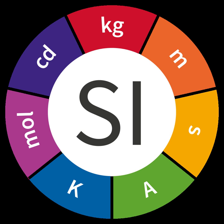After the 9th General Conference on Weights and Measures in 1948, the absolute watt was established, with 1 absolute watt equal to 1.00019 international watts. Texts written before 1948 are likely to use the international watt, which implies caution when comparing numerical values from this period with the post-1948 watt. In 1960 the 11th General Conference on Weights and Measures adopted the absolute watt into the International System of Units as the unit of power.